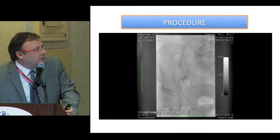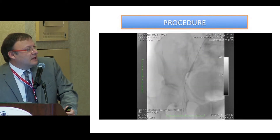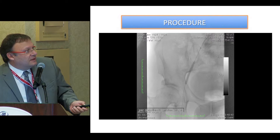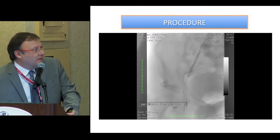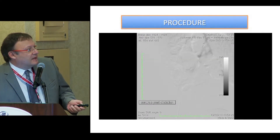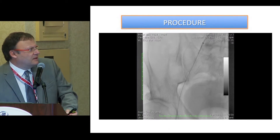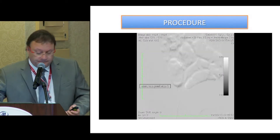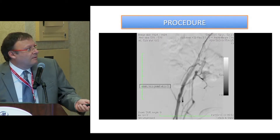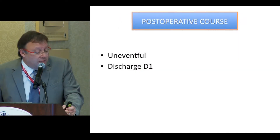We reentered directly in the common femoral artery and performed three angioplasties on the iliac. The sheath was positioned at the origin of the external iliac. The control demonstrated some dissections, which we treated by placement of a self-expandable stent — in this case, a Tigris stent. The final control was satisfactory. The postoperative course was uneventful and the patient is doing well.